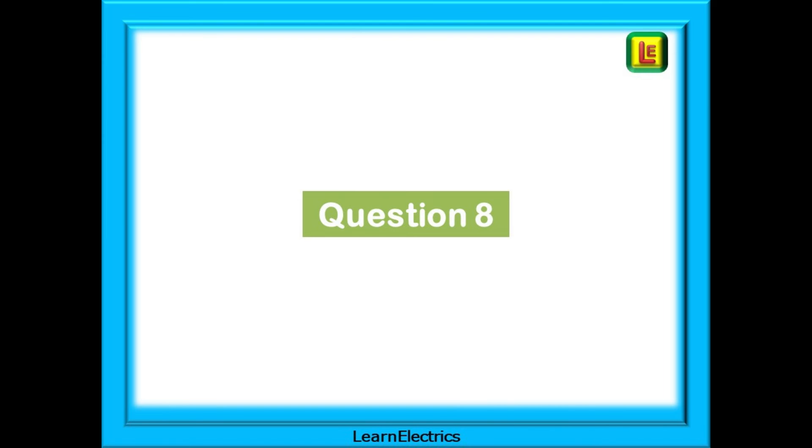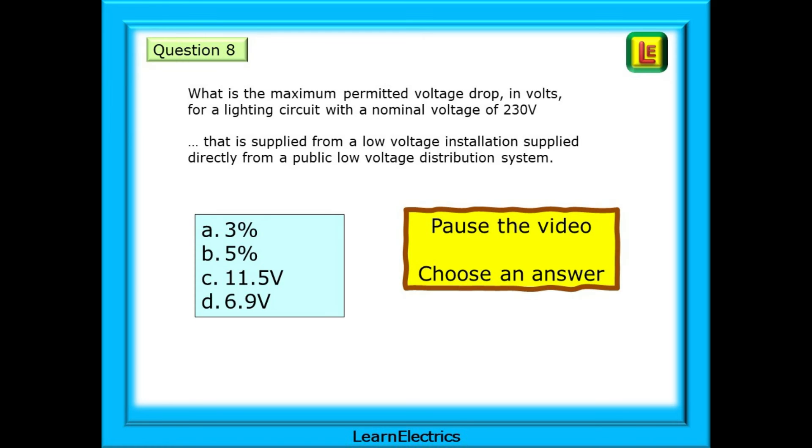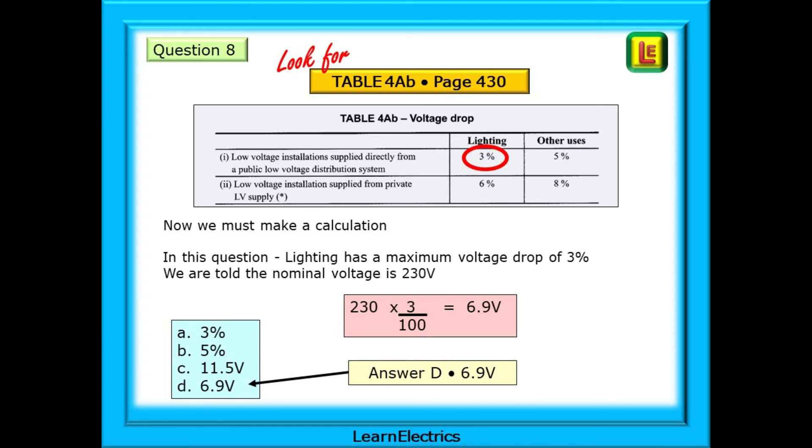Now for question 8. And this will involve a very small, very easy calculation. What is the maximum permitted voltage drop in volts for a lighting circuit with a nominal voltage of 230 volts that is supplied from a low-voltage installation supplied directly from a public low-voltage distribution system? There is a table for voltage drop somewhere. Let's find it in the tables.